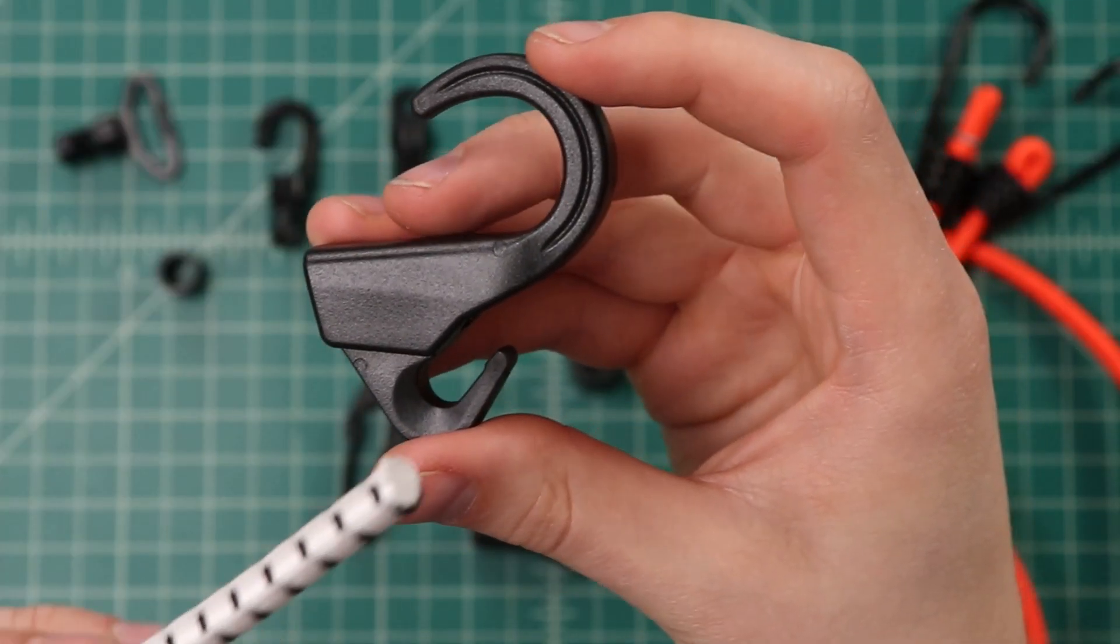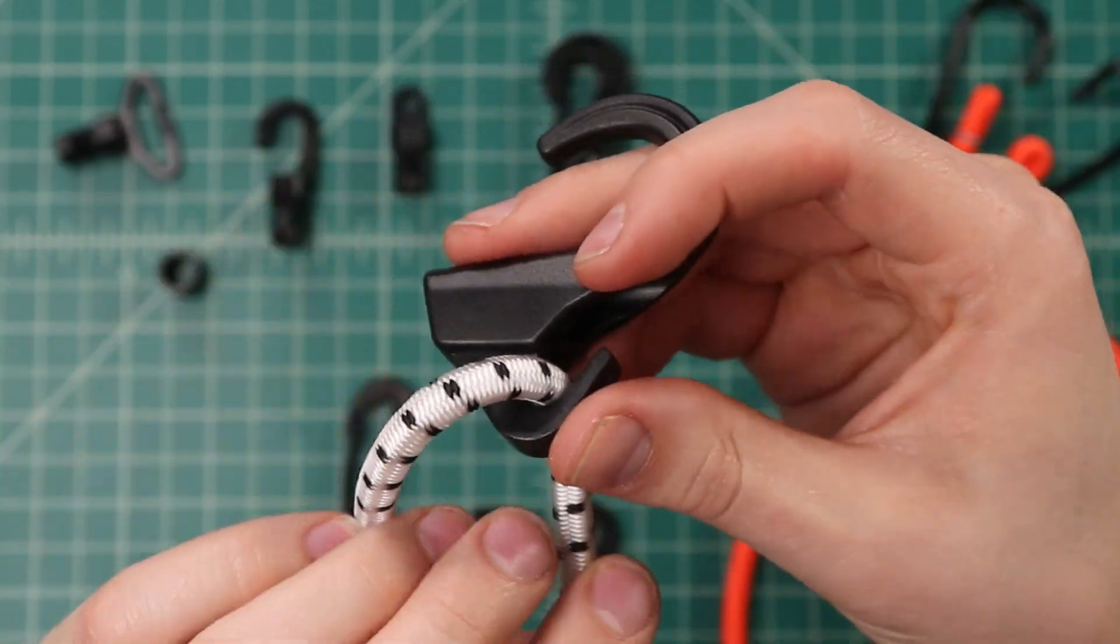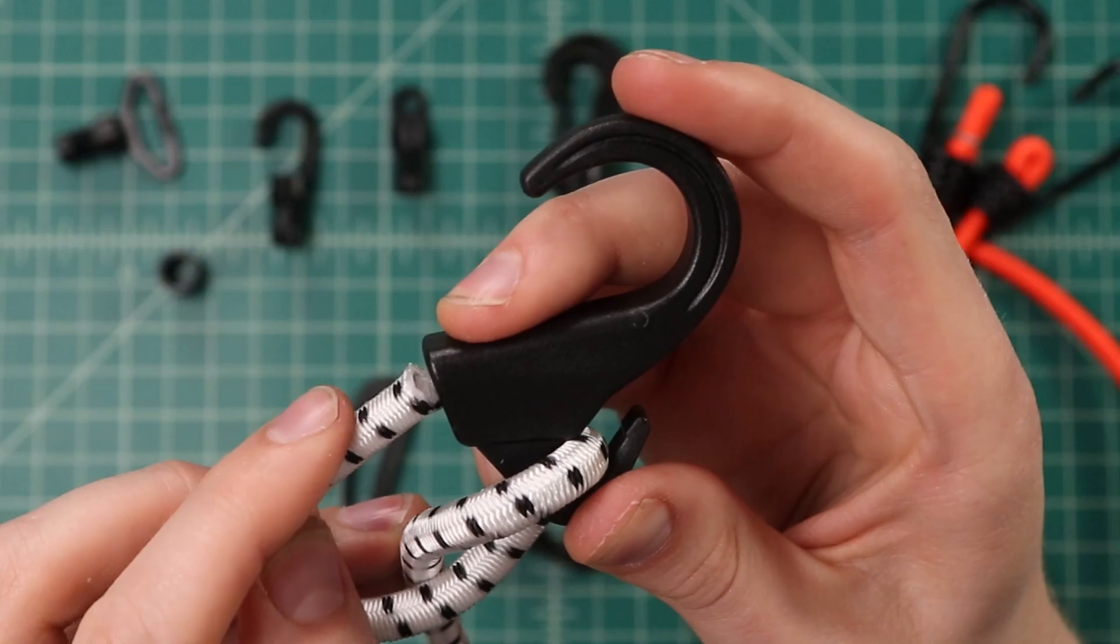And lastly, there's this jumbo hook. This works best with 5/16ths cord, and doesn't require any kind of knot tying or hog rings to secure the end.